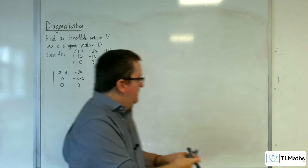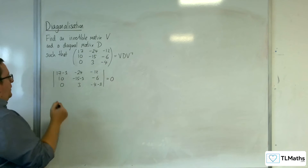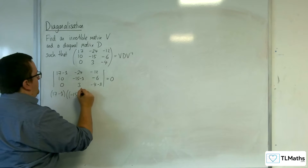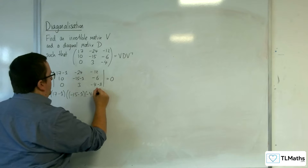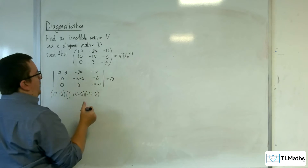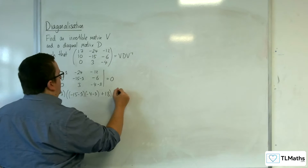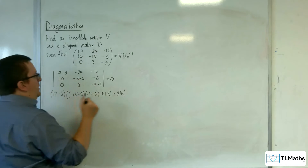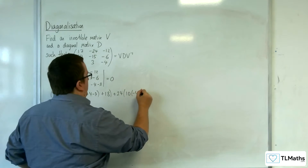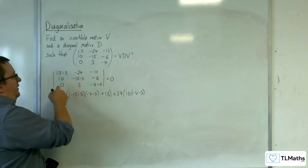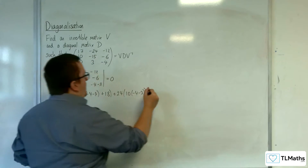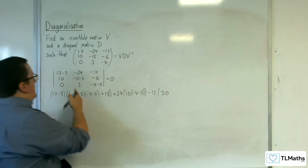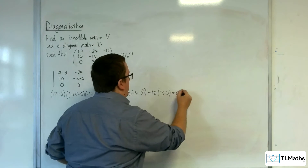I've got a feeling I need my calculator for this one. So we have 17 minus lambda, times minus 15 minus lambda, times minus 4 minus lambda, take away minus 6 times 3, so plus 18. Then plus 24 lots of 10 times minus 4 minus lambda, then take away minus 6 times 0, so just 0. Then take away 12 lots of 10 times 3, and that's going to be equal to 0.